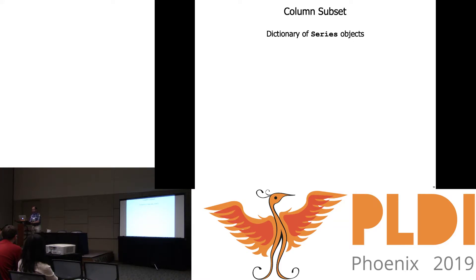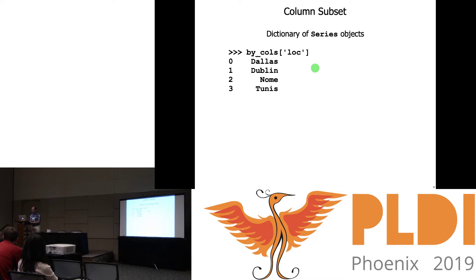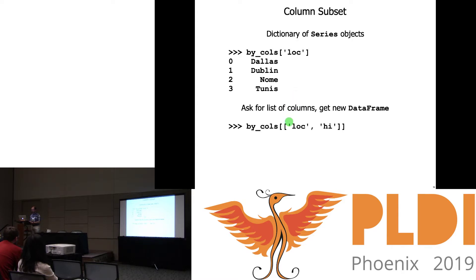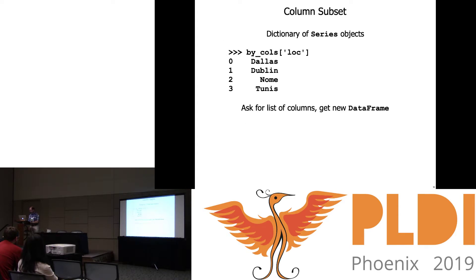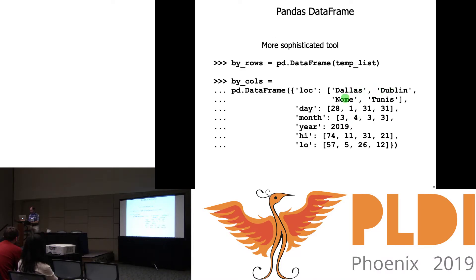You should also be able to extract particular columns from the table. In Pandas, a data frame is a dictionary of series objects, so we can use Python's regular index operator to ask for the location field and get a series of locations. We could also ask for a list of columns to get a new data frame containing only those columns — say location and high temperature. We can also update a column in a table by applying some transformation function, for example converting temperatures from Fahrenheit to Celsius for US locations.